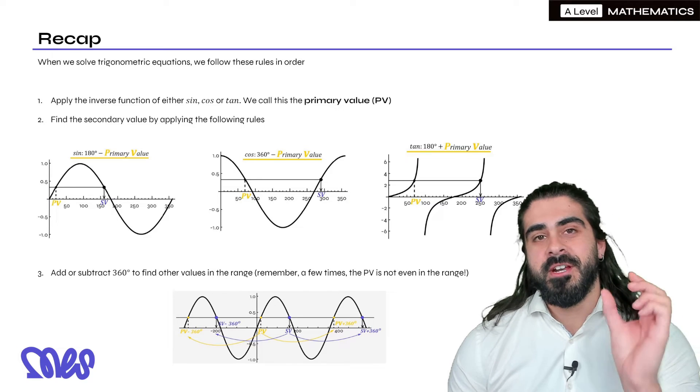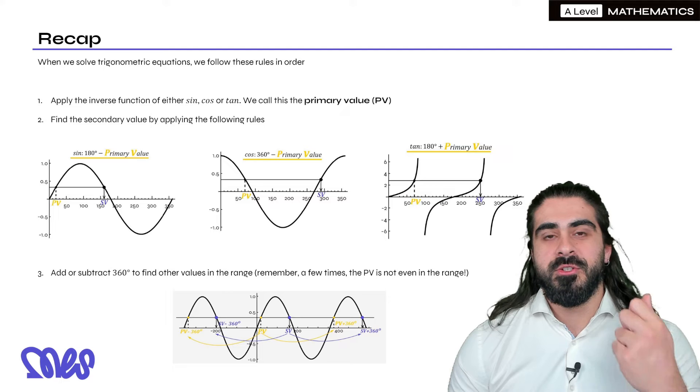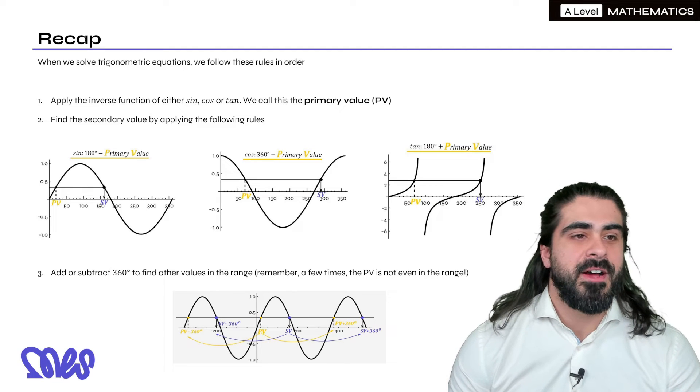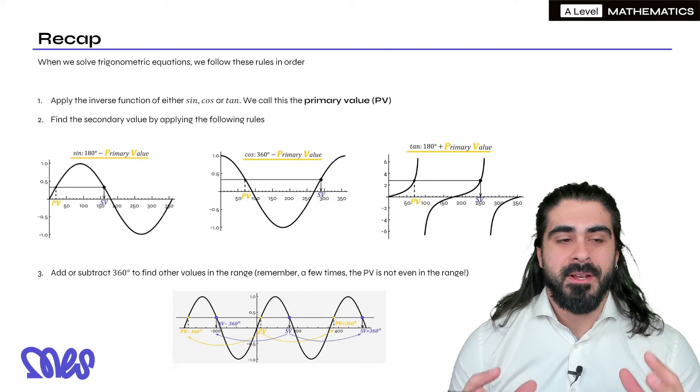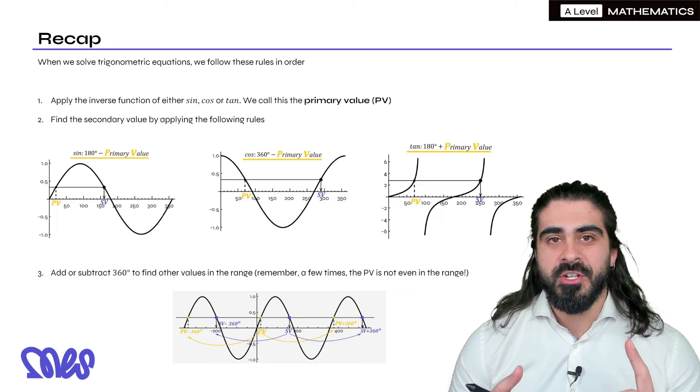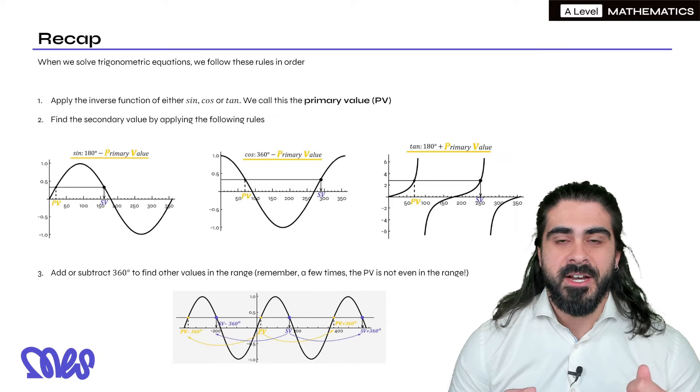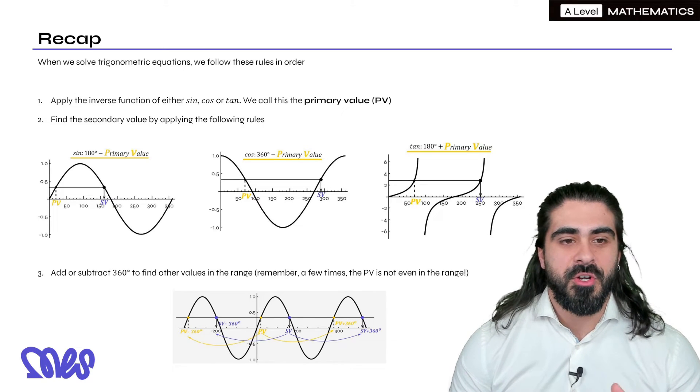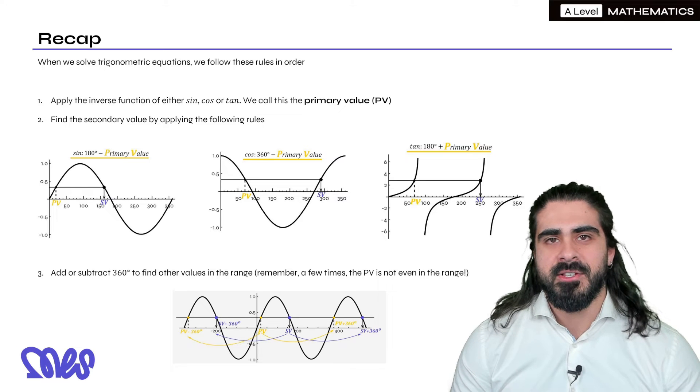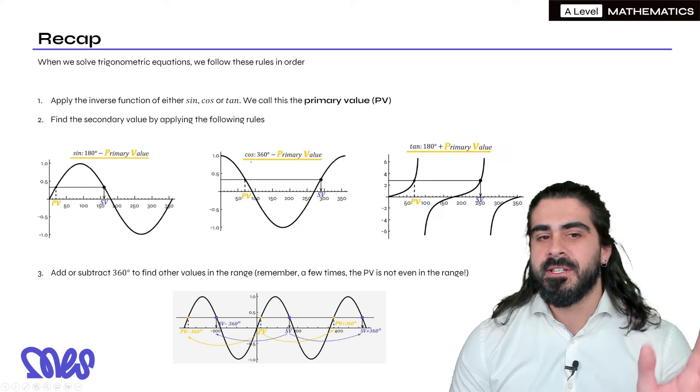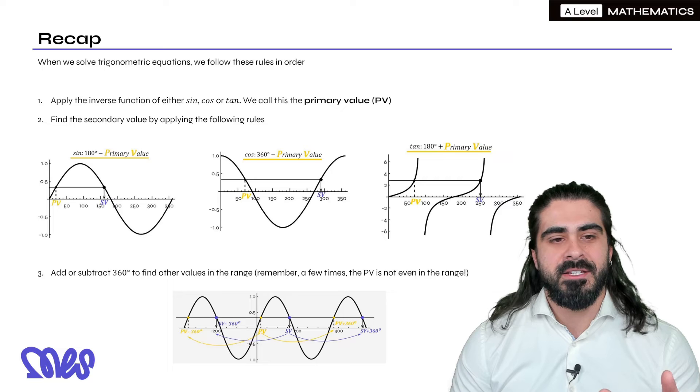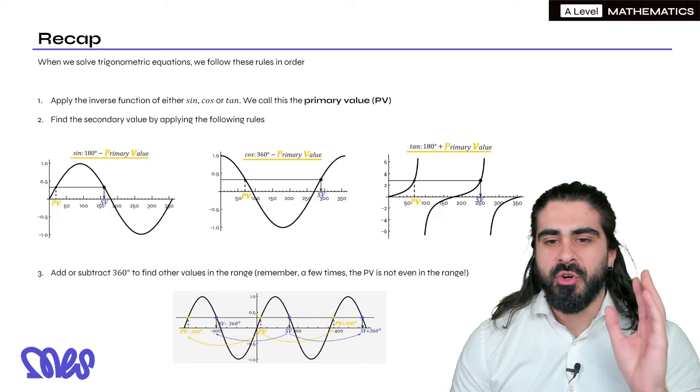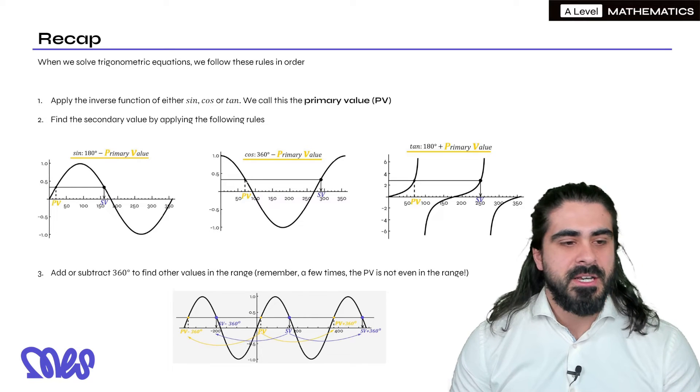Well the first thing is once we have rearranged for sine, cos, or tan, we do the inverse. That's known as the primary value. Then we apply some rules to find the secondary value. If you're dealing with sine, you do 180 minus. For cosine, you do 360 minus and tan, 180 plus. They're very simple to remember. If you do enough practice, you won't have to worry about consciously remembering them. It'll just be second nature.